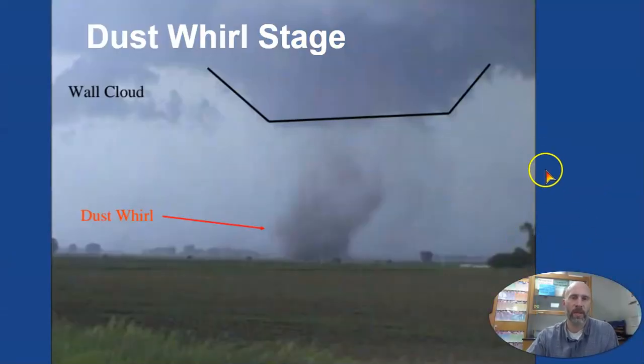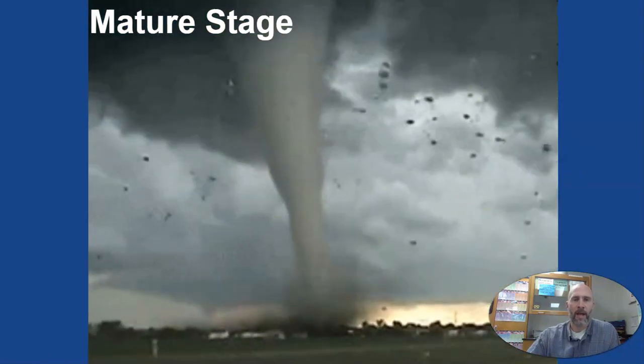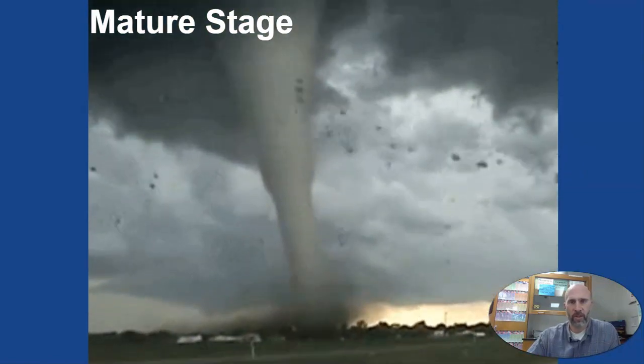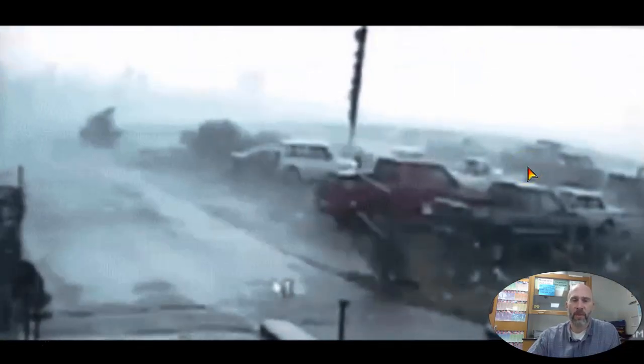When the tornado starts to form, you get the funnel cloud, then the dust whirls stage at the bottom, then it gets more organized, and finally reaches the mature stage where you have a legitimate tornado. At that point it's just a matter of how strong or large it's going to be. Tornadoes can be very fast moving — look at this animation showing a camera that caught a tornado coming through and how fast it's moving. Tornadoes can be very slow or very fast moving, so in either case they're very dangerous.